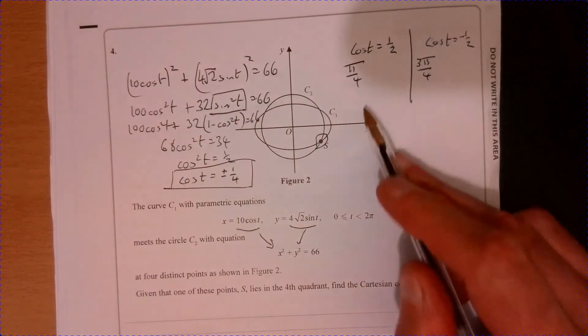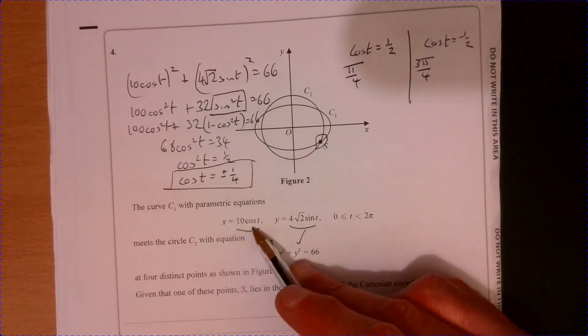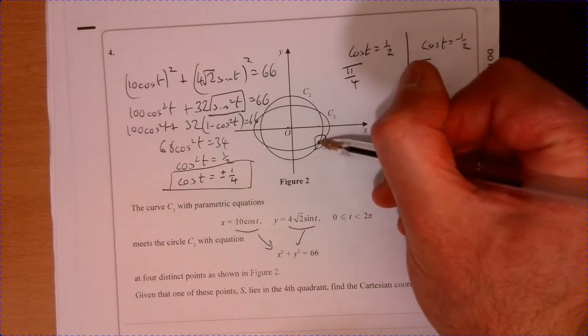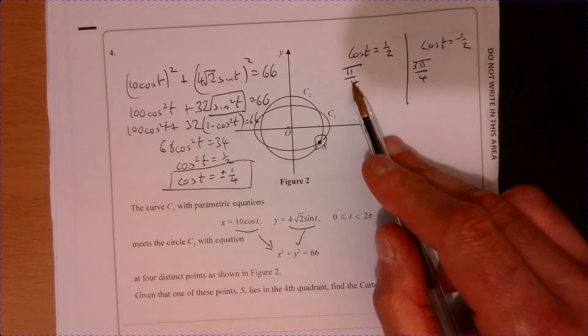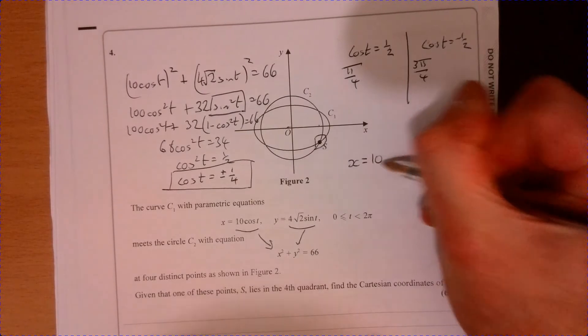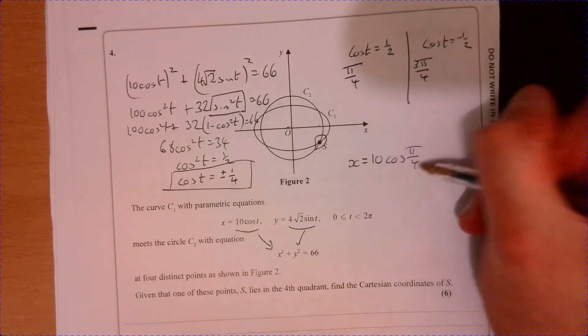Now, if I now substitute these in to my X value, remember I'm interested in this one over here. So I'm interested in the positive value of X. So if you just pop this one in and just see what happens. So we get X equals, so 10 cos pi over four.